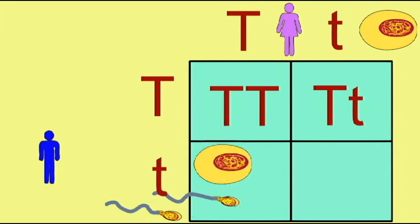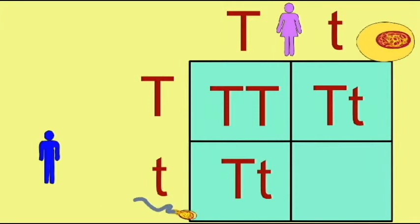One quarter of the offspring would possess a recessive allele from each parent and would be homozygous recessive.